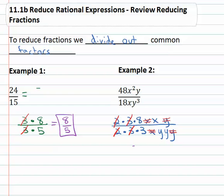All that we have left in the numerator is eight x. In the denominator, we have a three and y times y or y squared.